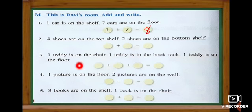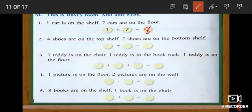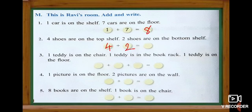Look at the next sum. Four shoes are on the top shelf and two shoes are on the bottom shelf. Four plus two — now we are going to find out. Shall we count? One, two, three, four, five, six. Totally how many shoes? Six shoes are on the shelf.